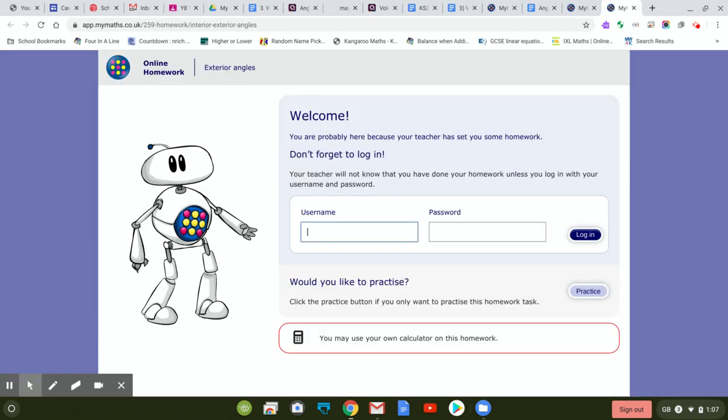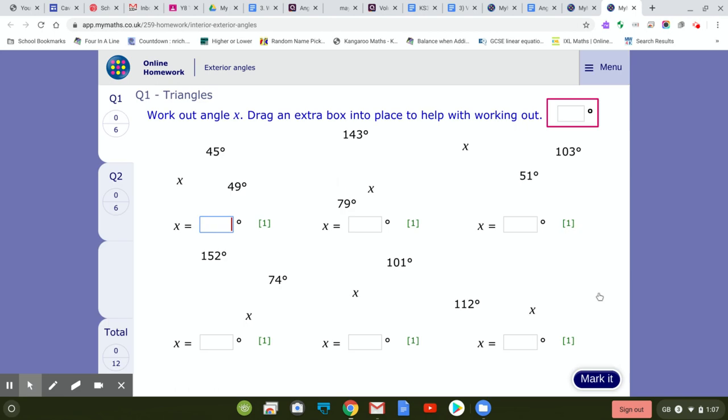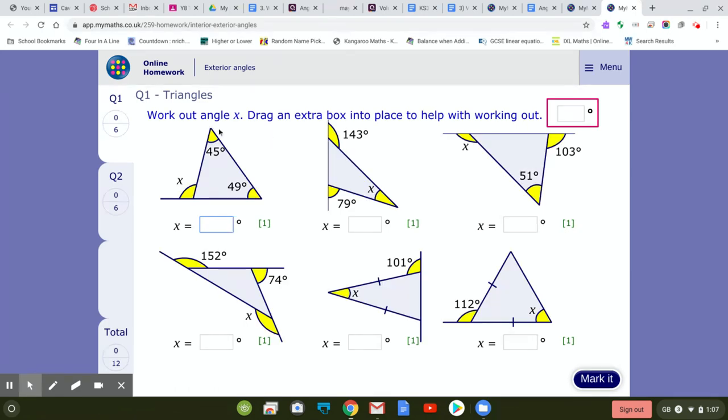These triangle ones you should be able to do—two angles here, figure out the third one. They add up to 180, so you can use calculators.